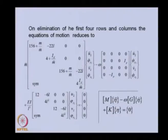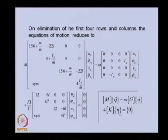The reduced equation of motion has the form: M η̈ − ω G η̇ + K η = 0. Because of the gyroscopic couple, there is an additional velocity-dependent term. When the equation of motion contains first-derivative (velocity) terms, the standard eigenvalue problem is no longer valid, and we must convert it to a standard eigenvalue problem using the state space form.